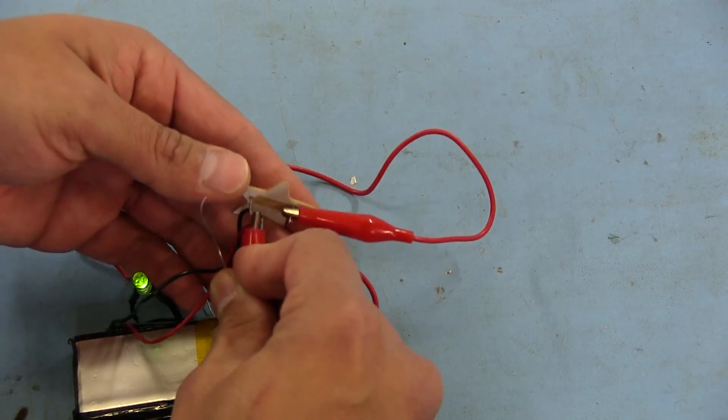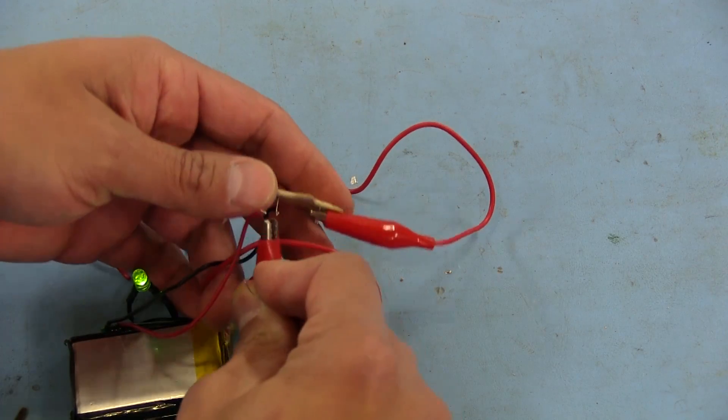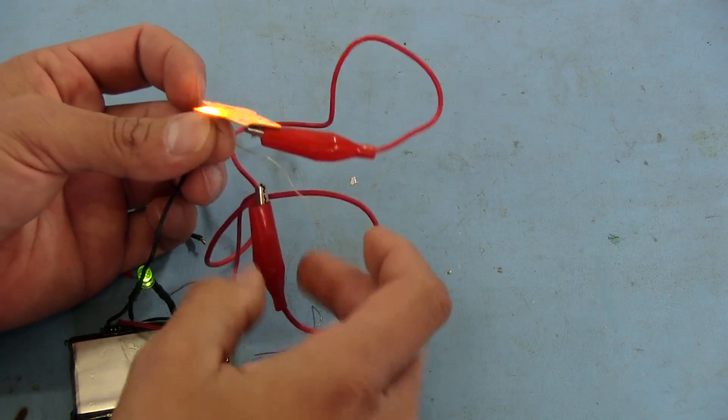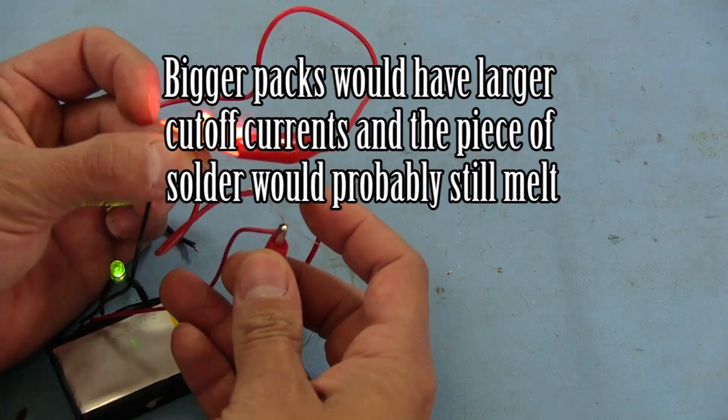If I touch this to the negative and then touch the other side to the positive, it doesn't melt because it cuts off right away.